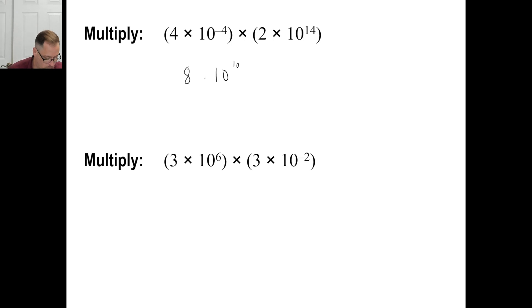Let's pause it and try B. Same thing. 3 times 3 is 9. And it'd be 10 to the 6 plus negative 2, which is 4. There you go. Pause it and try C.